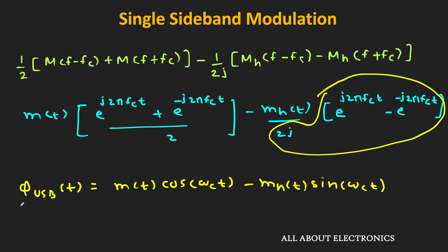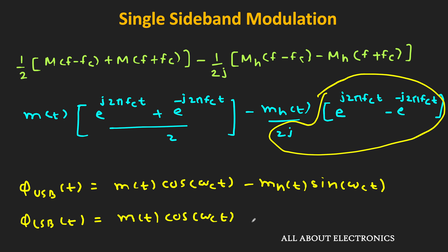So we found the expression of the USB signal, where mh(t) is the Hilbert transform of m(t). Similarly, the LSB signal is: φ_LSB(t) = m(t)·cos(ωc·t) + mh(t)·sin(ωc·t).